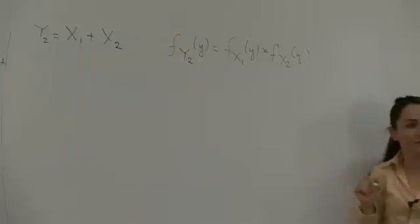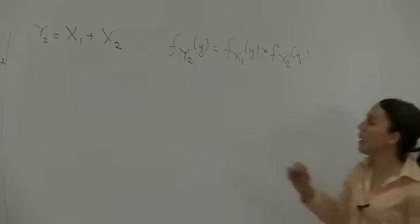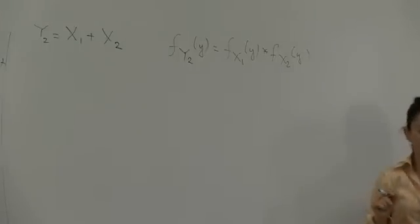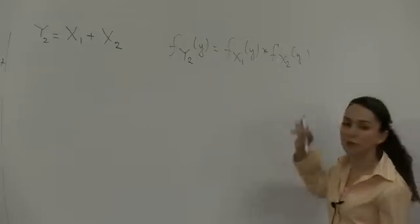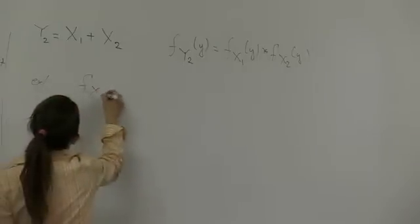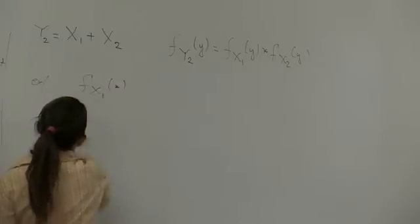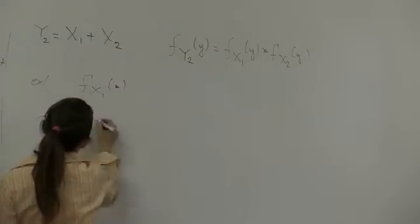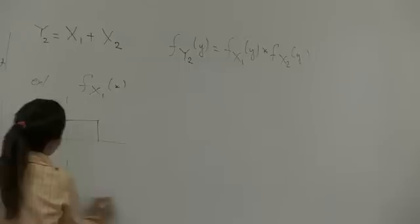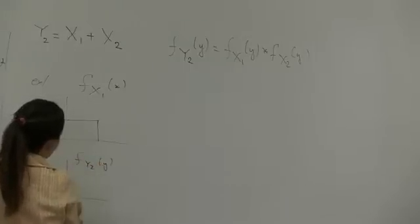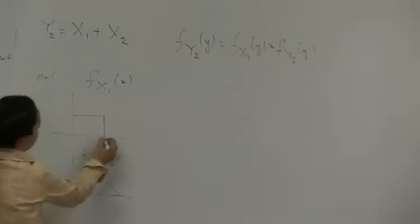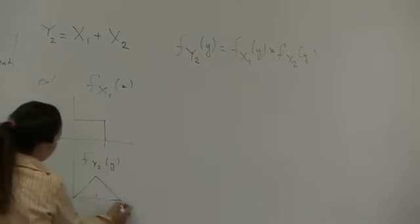And we said, let y2 be equal to x1 and x2. Do you remember that fy2 of y was simply found by convolving the densities of x1 and x2? And we did an example where these densities were uniform. And as a result of convolution, you'll remember this example where fx1 of x was uniform, looked like this.